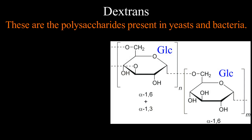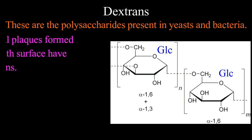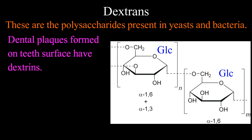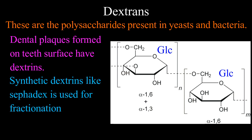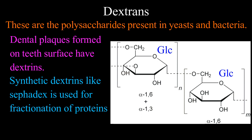Dextrins are polysaccharides present in yeast and bacteria. They consist of glucose residues joined through alpha-1,6 glycosidic linkage, while branch points have alpha-1,3 glycosidic linkages. Dental plaques formed on teeth surface have a lot of dextrins. Synthetic dextrins like Sephadex are used for fractionation of proteins.